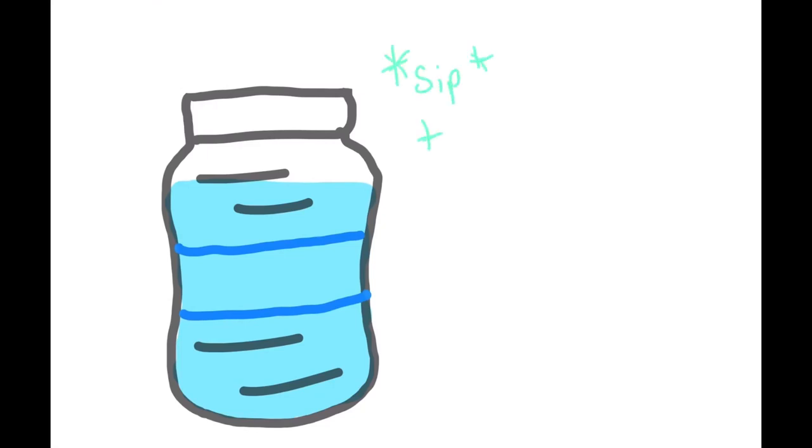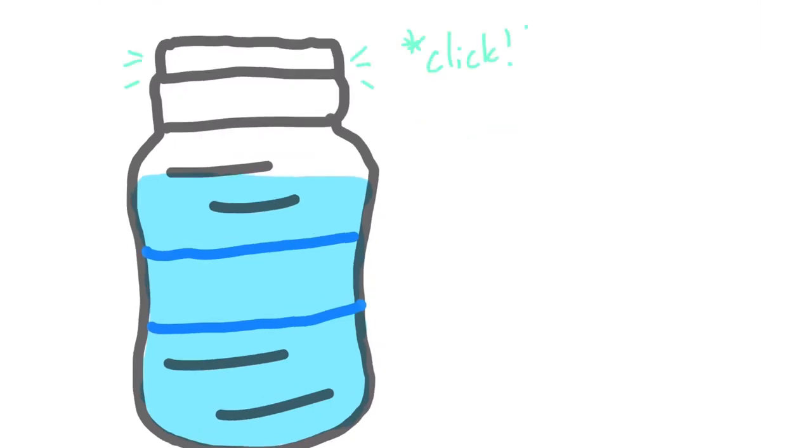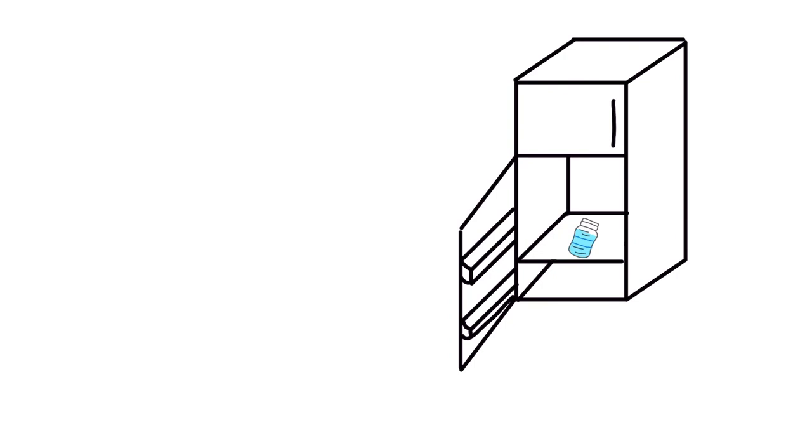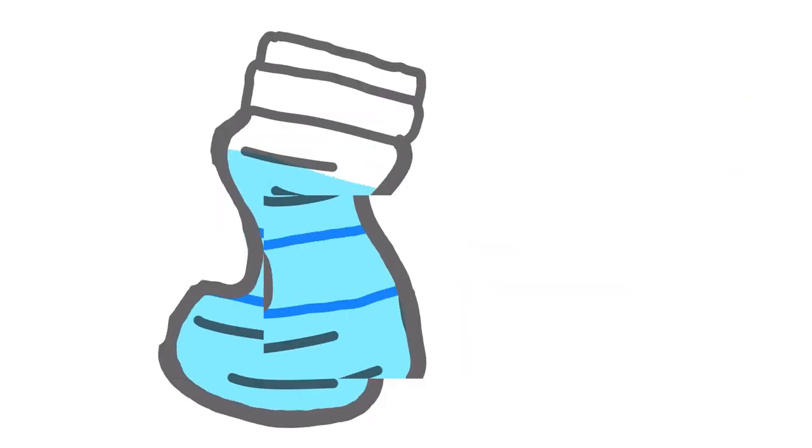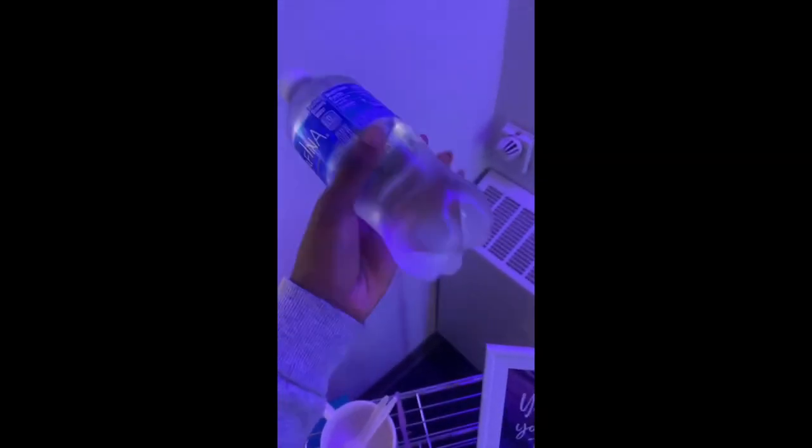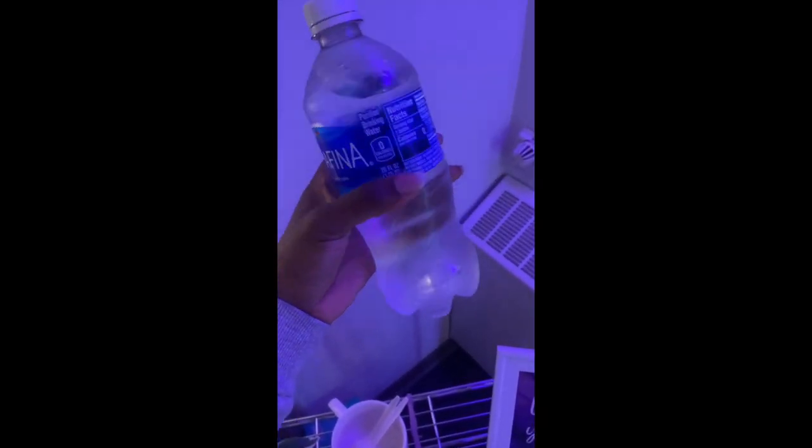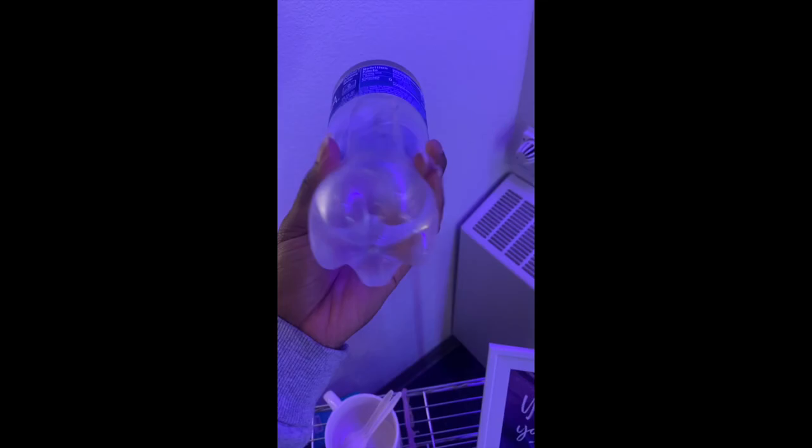If you've ever started drinking something from a plastic bottle, closed the bottle, and put it in the fridge for later, you probably noticed something weird about the bottle when you got back. It might be caved in or deformed, and you might notice that when you try to squish it, it has some weird behavior. What causes this?